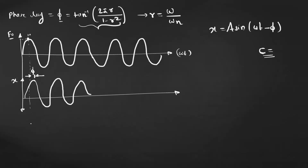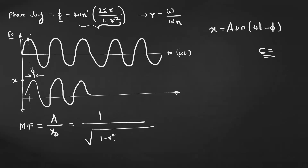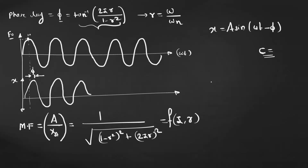Then we have seen the magnification factor. There is one equation for the magnification factor: A / x_static = 1 / √[(1 − r²)² + (2ζr)²], where r is the frequency ratio. The right-hand side has two terms — ζ and r — so the magnification factor becomes a function of these two parameters. With this equation we can study the effect of various damping factors and frequency ratios. The magnification factor is a dimensionless parameter representing the amplitude.